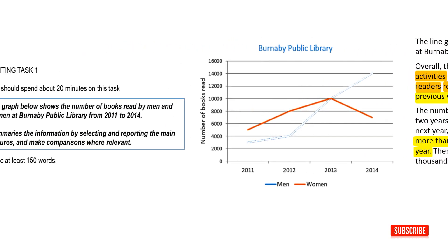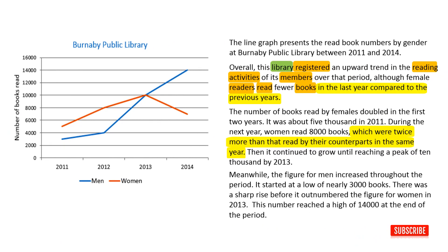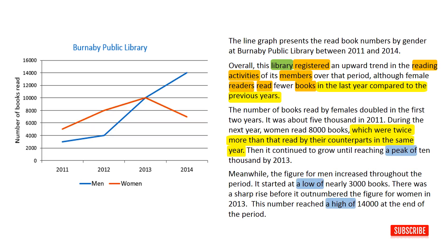Now let's read the instruction on the question card. It is written: 'Make comparisons where relevant.' Now, moving on to the last paragraph: 'Meanwhile, the figure for men increased throughout the period. It started at a low of nearly 3,000 books. There was a sharp rise before it outnumbered the figure for women in 2013. This number reached a high of 14,000 at the end of the period.' As you see, I described some extreme points with the same phrases — 'a peak of,' 'a low of,' 'a high of.' These phrases are useful to show the key features in the graph.